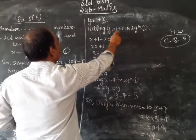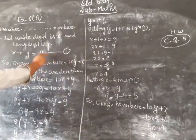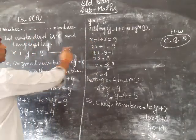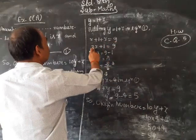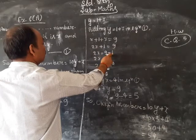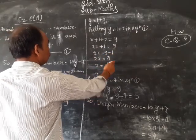Putting y equals 1 plus x in equation 1: x plus y becomes x plus 1 plus x equals 9. So 2x plus 1 equals 9, therefore 2x equals 8, x equals 4.